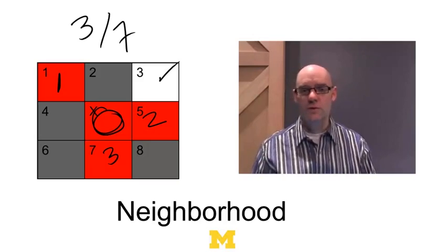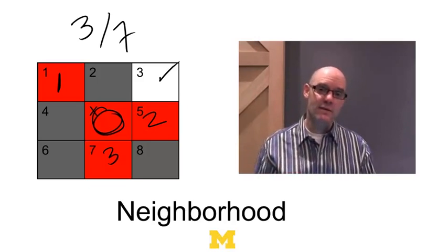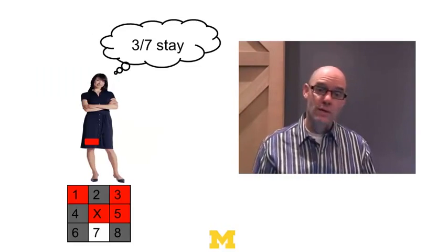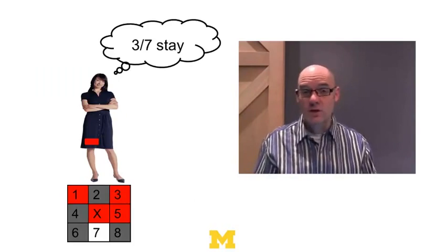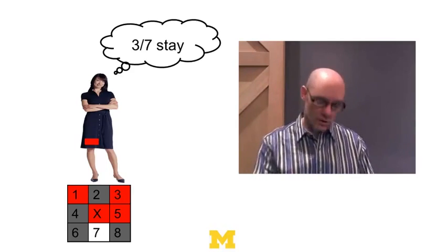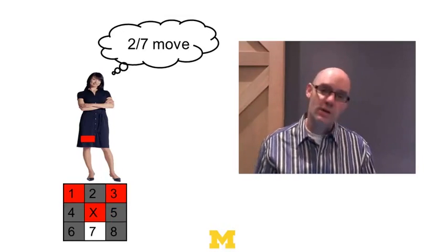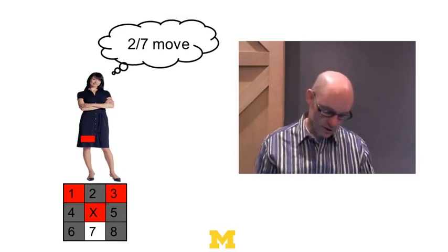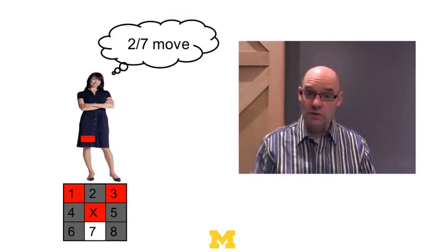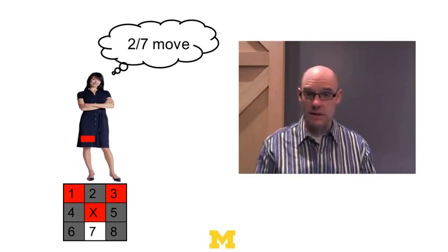This is where Schelling writes down the rules — a threshold-based rule. Each person has a threshold, and they decide based on this threshold whether to stay or move. One rule might be that three-sevenths is good enough — say, 33%. If 33% of my neighbors are like me, I'll stay; but if fewer than 33% are like me, I'll move. So this woman sees three of her seven neighbors are like her and stays. But if one neighbor moved out and now only two out of seven were like her, she'd move.